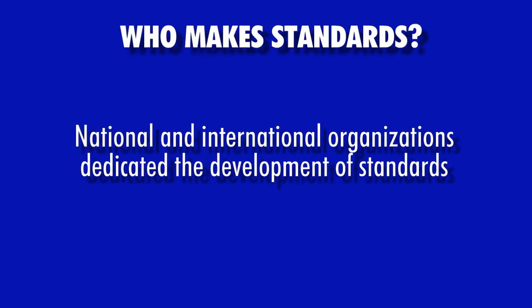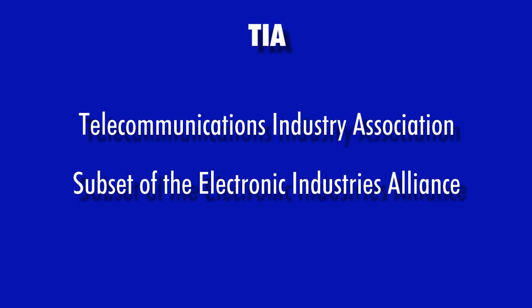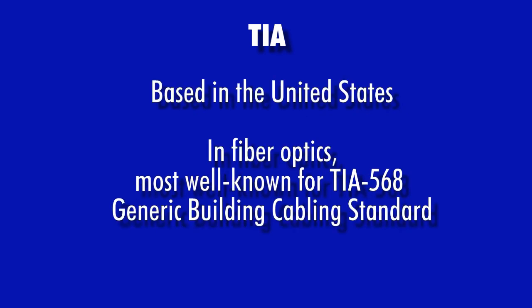Cabling standards are developed by several national and international organizations dedicated to performing research and development activities related to the formation of cabling standards. Perhaps the most well-known cabling standard in the United States is the Telecommunications Industry Association, or TIA, which is a subset of the Electronic Industries Alliance, or EIA. Originally developed in 1991, the TIA-EIA 568 cabling standard is the primary standard for certifying commercial building networks in the U.S.